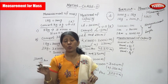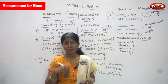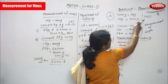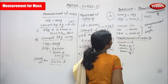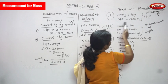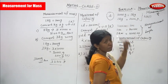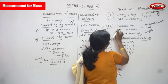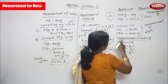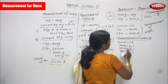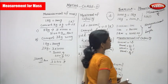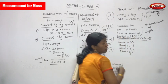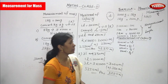Measurement is completely over — measurement of length, measurement of mass, and measurement of capacity. Don't forget the formulas; you have to memorize them. Measurement of mass: 1000 gram is equal to 1 kilogram, and 1 kilogram is equal to 1000 gram. Measurement of length: 100 centimeter is equal to 1 meter, 1 meter is equal to 100 centimeter, and 1 kilometer is equal to 1000 meter. According to the question, you have to change the formula accordingly.